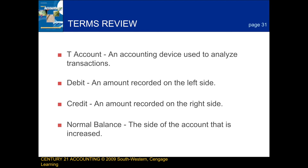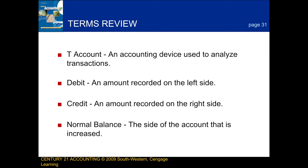To start this review of the Chapter 2 Lessons, there are a bunch of key terms that I would like to go over. A T-account is an accounting device that is used to analyze transactions. A debit is an amount that is recorded on the left side. A credit is an amount that is recorded on the right side.